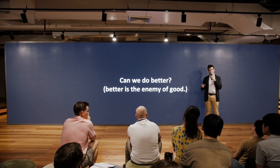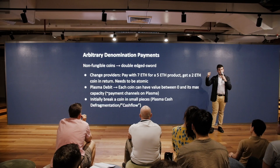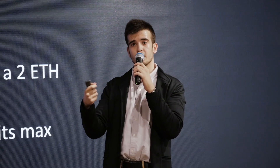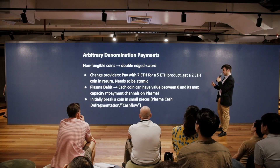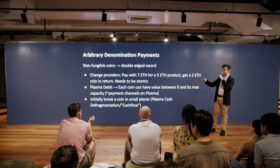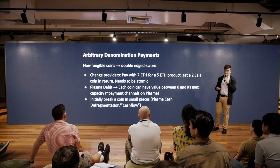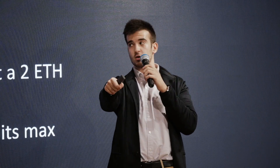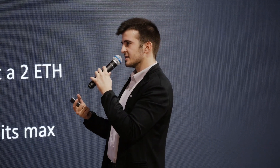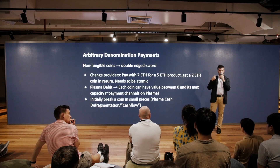Currently we only have one-input one-output: I give a coin to someone else. But we want to support smaller denominations. One approach is a change provider — like paying with a seven-ether coin for a five-ether product and getting two ether back. This requires an atomic transaction: the moment you send the seven-ether coin you must receive the two-ether change in one transaction, which is non-trivial to make trustless.